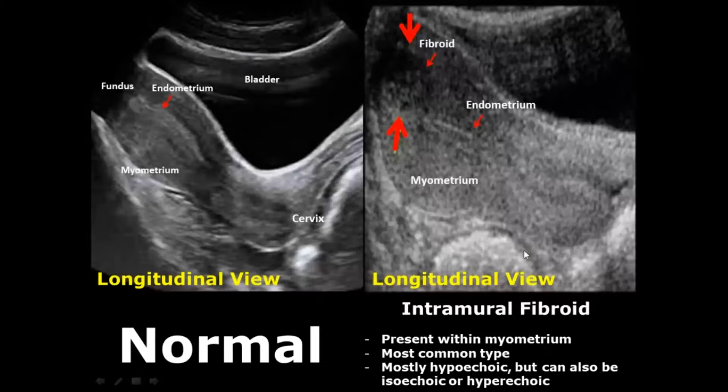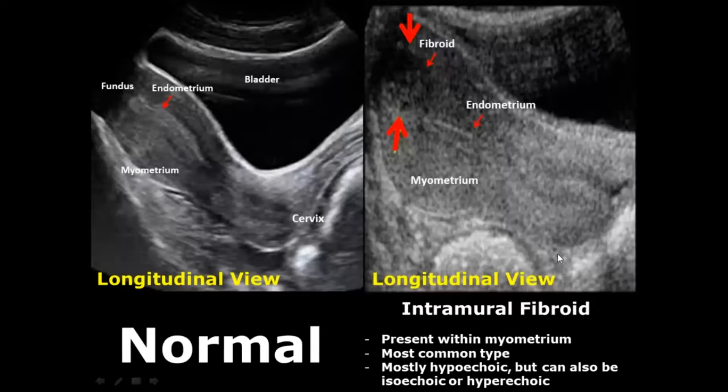Uterine fibroids, also known as leiomyomas, are benign tumors of the uterus. They are divided into different types based on their location. The most common type is the intramural fibroid, present in the myometrium. It mostly appears hypoechoic, but can also be isoechoic or hyperechoic.